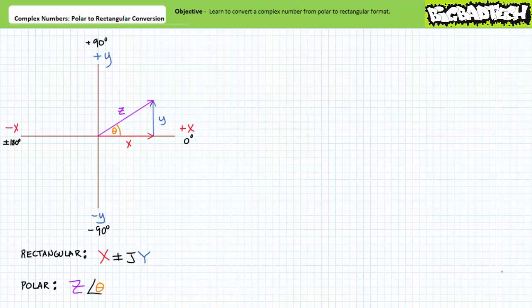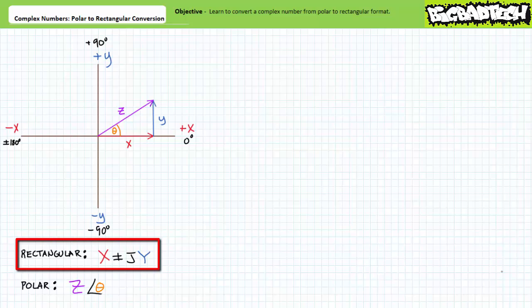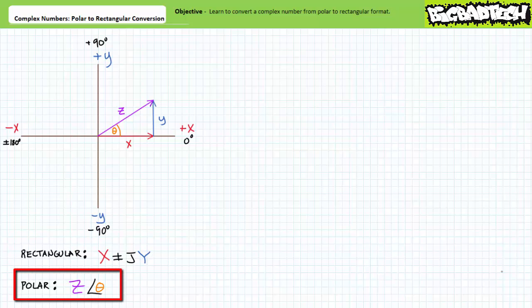If you recall from the aforementioned lectures, we learned to express a complex number using rectangular format as a pair of numbers: a real horizontal X component plus or minus an imaginary vertical Y component times J. Additionally, we learned that a complex number can alternatively be expressed using polar format, including a magnitude Z acting at a specific angle theta. Rectangular format is especially well suited to addition and subtraction, whereas polar format is especially well suited to multiplication and division.